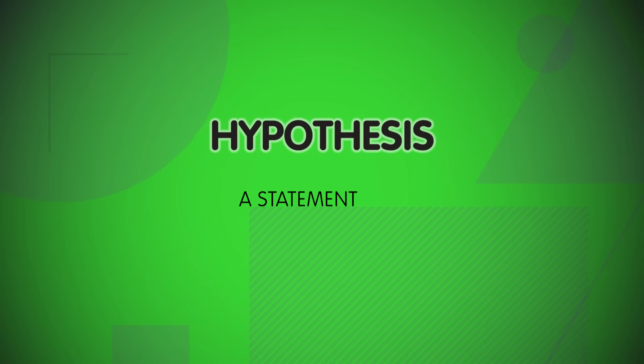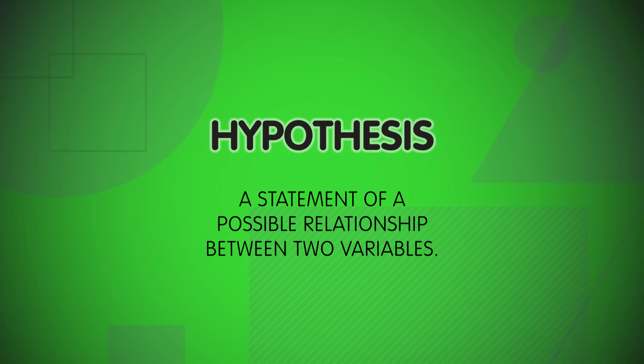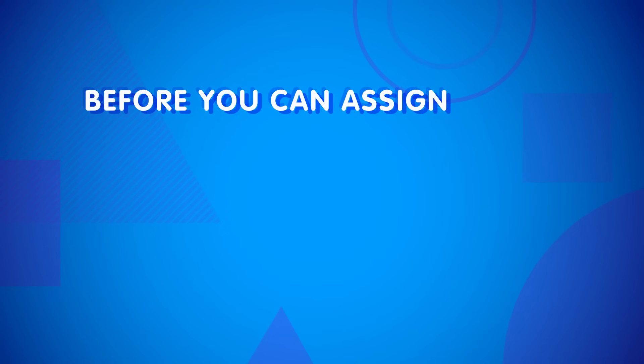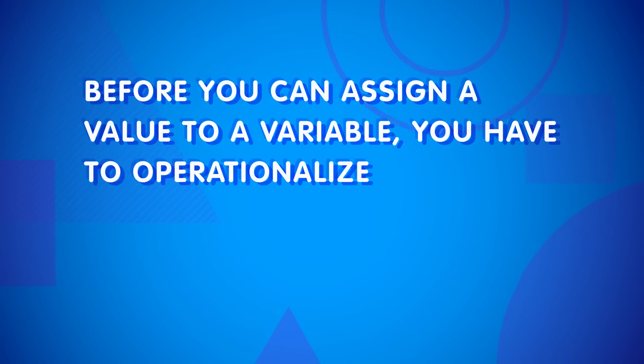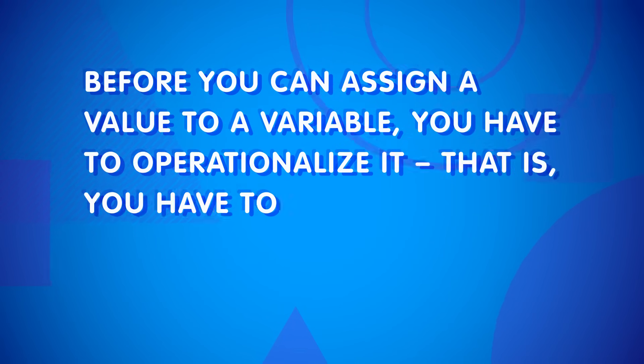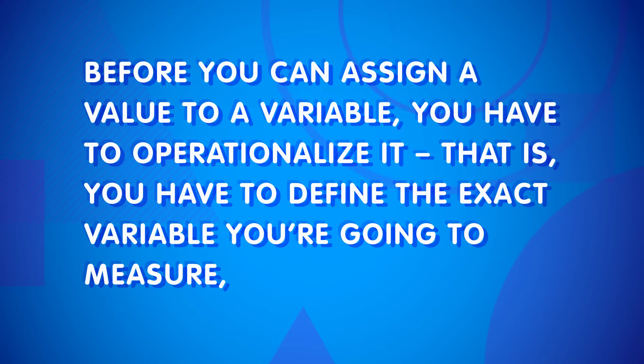That won't work. So you have to define your concepts, which becomes even more important when you get to the next part of the research process – stating a hypothesis, a statement of a possible relationship between two variables. A variable is just something that can take on many different values. It varies – hence the name. So before you can assign a value to a variable, you have to operationalize it. That is, you have to define the exact variable you're going to measure, and exactly how you will measure it. For example, you can operationalize a variable that you want to use to understand relationships by defining it as reported marital status.